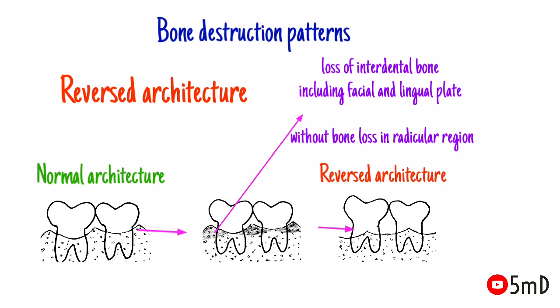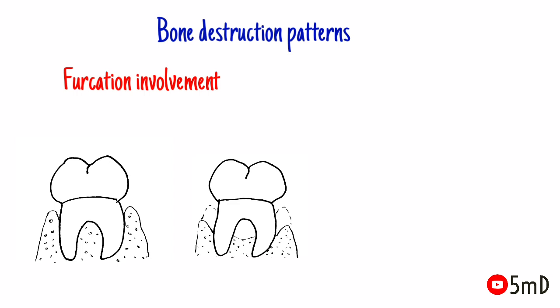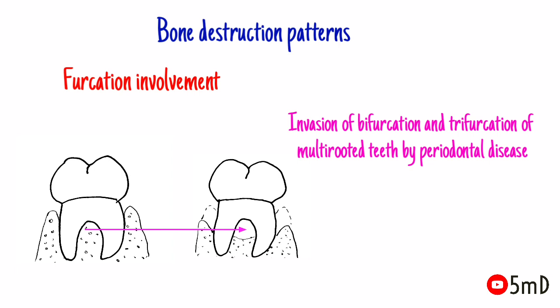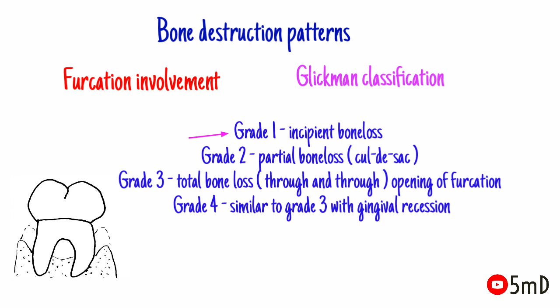The final pattern of bone destruction to be seen is furcation involvement. The term refers to the invasion of the bifurcation and trifurcation of multi-rooted teeth by periodontal disease. It is classified into four grades by Glickman. Grade one is incipient bone loss. Grade two denotes partial bone loss, also known as cul-de-sac. Grade three is total bone loss with through-and-through opening of the furcation. Grade four is similar to grade three but with gingival recession exposing the furcation.